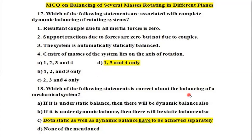Question 18: For complete balancing of a mechanical system, both static and dynamic balance must be achieved separately. Only when both are achieved can we say the system is completely balanced.